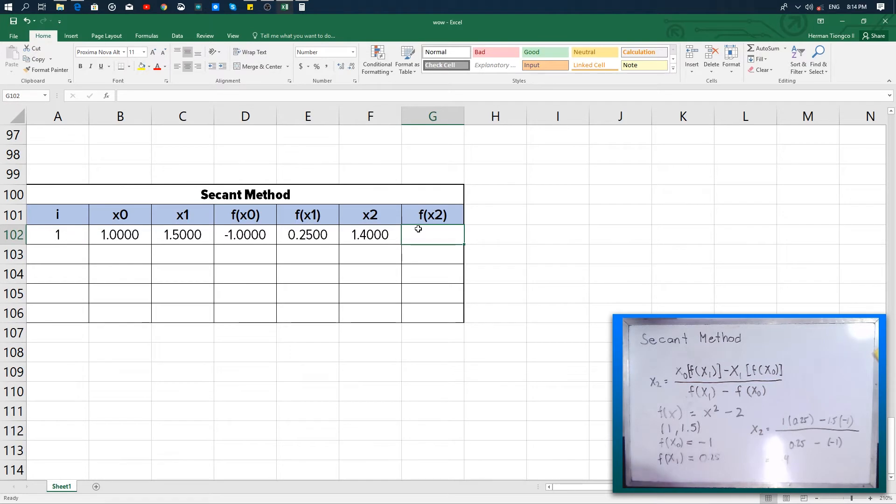And then if we substitute the value of x₂ into our equation, we will get the value of f(x₂) which is -0.04.